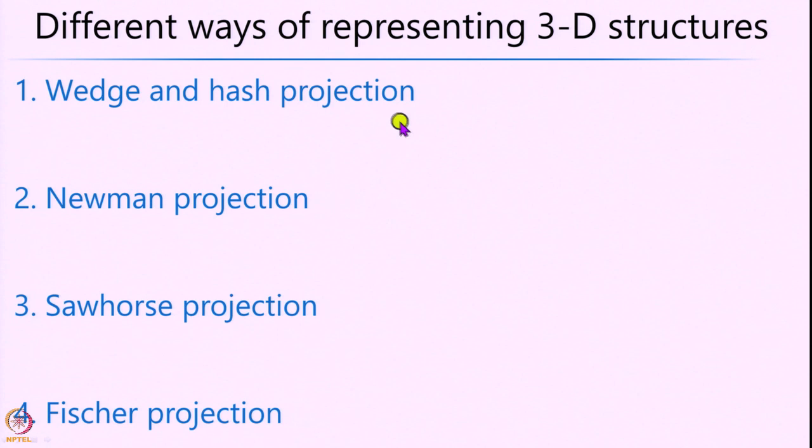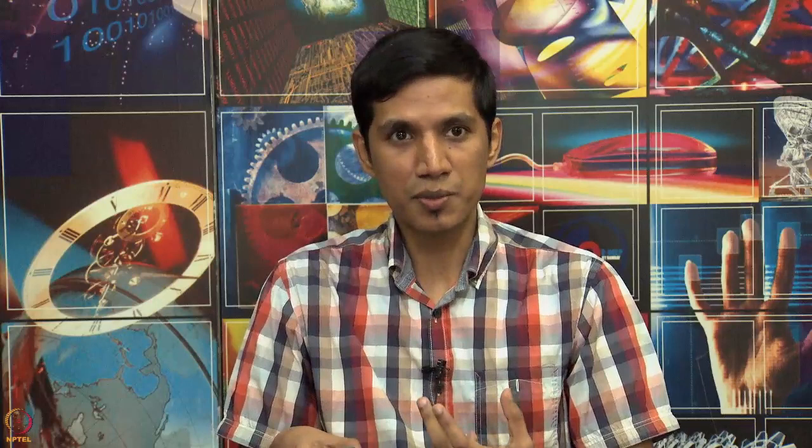Having looked at the story behind tetrahedral carbon and Van't Hoff's discovery, let us now see the different ways of representing a 3D structure. Broadly classified, there are four different ways. The first is called the wedge-and-hash projection, the most popular. The second is the Newman projection, also quite popular. The third is the sawhorse projection, and the final one is the Fischer projection, developed by Emil Fischer.